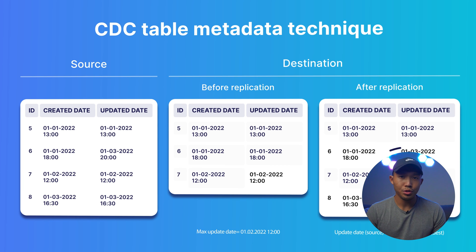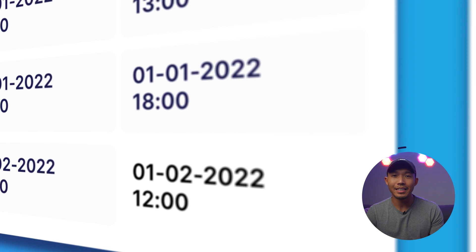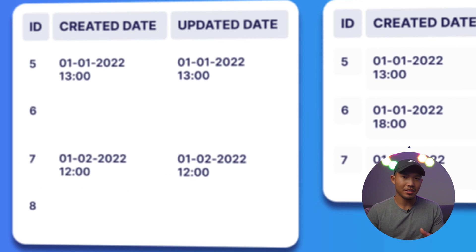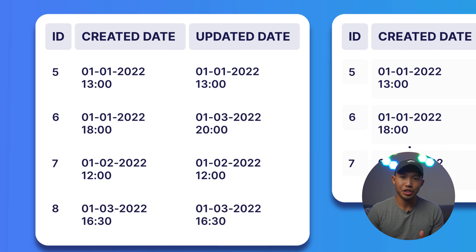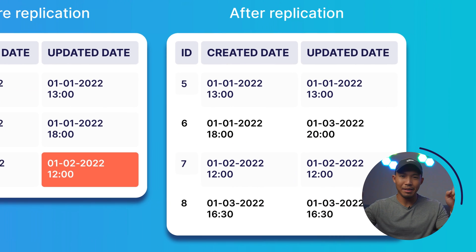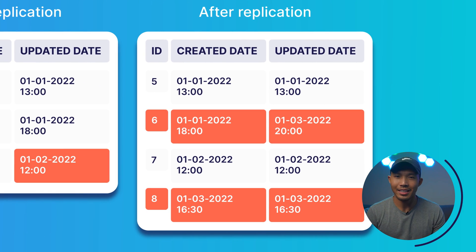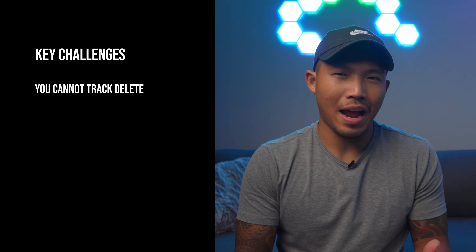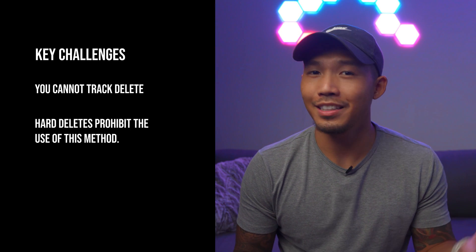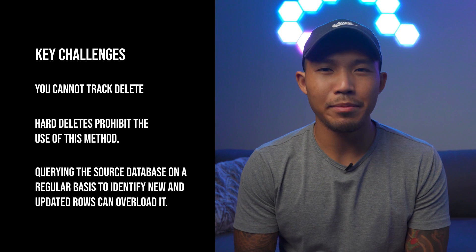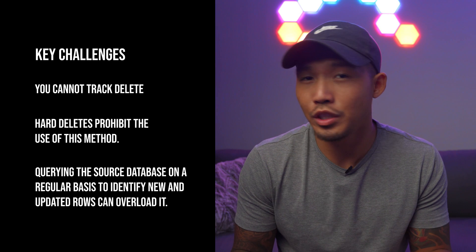A common way this method is used is by looking at the updated_at column in the destination table first, comparing it to the source's updated_at column. Once you find the deltas in the updated_at columns for only the rows that have changed, those deltas will be merged into the destination, rendering both databases in sync. A key challenge is that you cannot track deletes, and regularly querying the database can overload the source database.